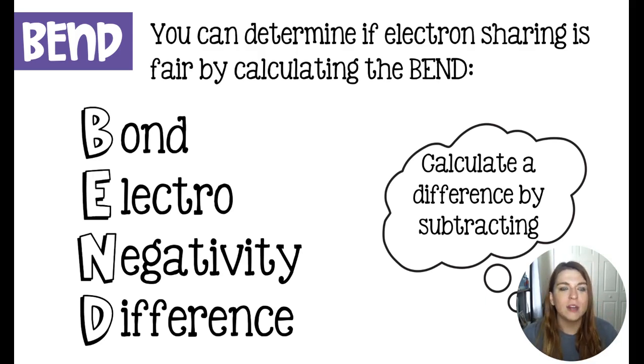We can determine if an electron is being shared fairly, or if one atom is kind of hogging the electron, by using BEND. BEND stands for bond electronegativity difference, and you just take the difference by subtracting the two electronegativity values.